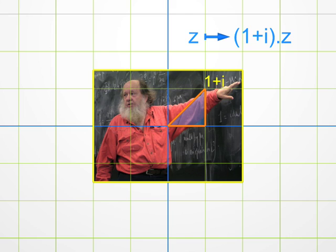Its argument is 45 degrees, and its modulus is the square root of 2, using the Pythagorean theorem.